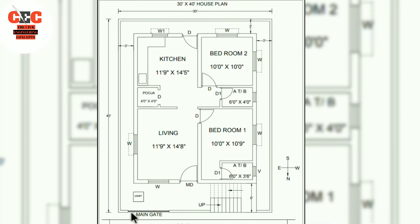Coming to the plan, let us start with the main gate. The main gate will be 6 feet wide and in the northeast corner an underground water tank is provided. The cover of the water tank is shown in the plan. A staircase is provided in the northwest corner.